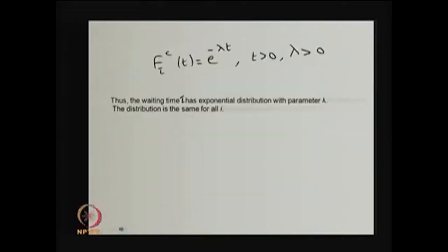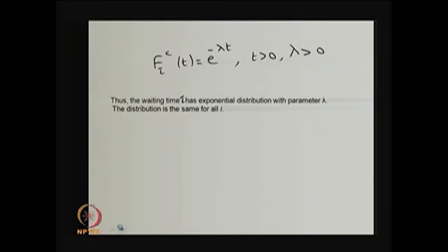We now need to find which distribution satisfies this complement CDF property. If the complement CDF is of the form e^(−λt) for λ > 0, the equation is satisfied. Since the complement CDF is e^(−λt), the CDF of tau is 1 − e^(−λt) for t > 0. You know that if the CDF is 1 − e^(−λt) for t > 0 and λ > 0, then that random variable is exponentially distributed.